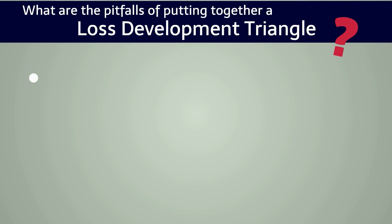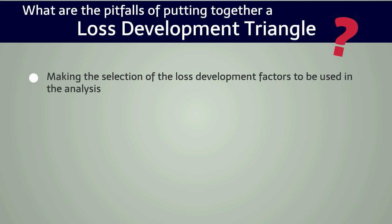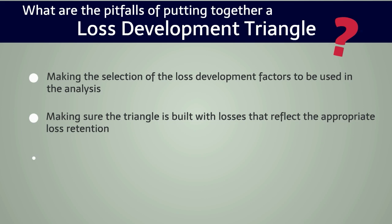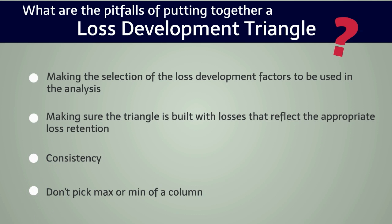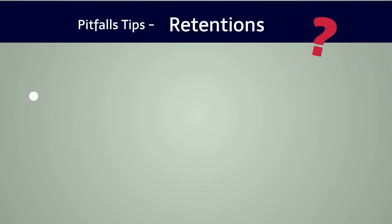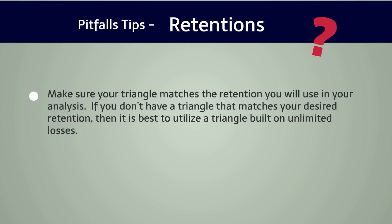There are several potential pitfalls with putting together a loss development triangle, usually occurring in the selection of the loss development factors. You want to make sure the triangle is built with losses that reflect the appropriate loss retention, and that you use it consistently through the history of the data you're gathering. Make sure you are using incurred losses or paid losses as appropriate for the type of triangle you're building. Recognize the variability in the factors and don't just pick the maximum or minimum of a factor in a given column. If you don't have a triangle that matches the retention you need, it is best to utilize a triangle built on unlimited losses.